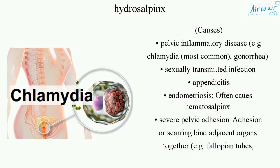Causes: Pelvic inflammatory disease — e.g., chlamydia (most common), gonorrhea — sexually transmitted infections. Appendicitis. Endometriosis, which often causes hematosalpinx. Severe pelvic adhesion.